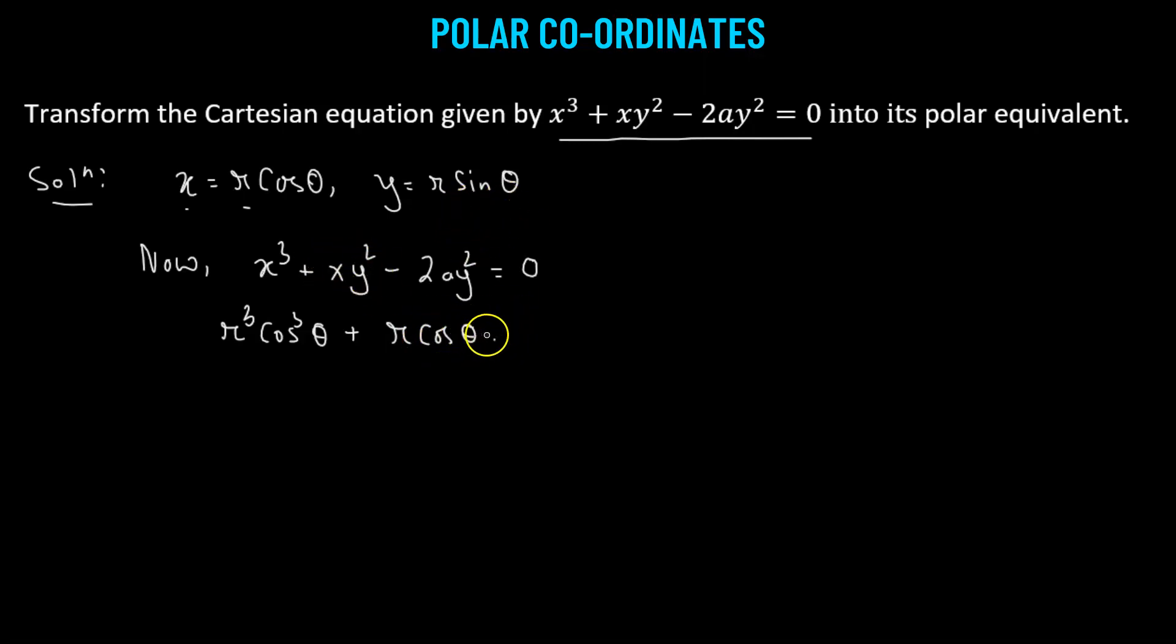So since we have y squared, then we'll get r squared sine squared theta. Minus 2a times y squared. So y squared will be r squared sine squared theta. So this becomes equals to 0.